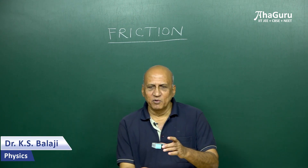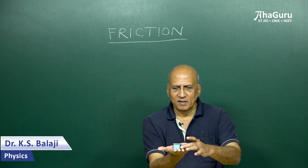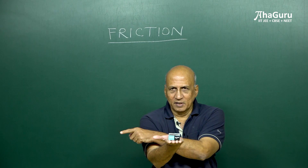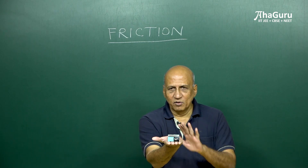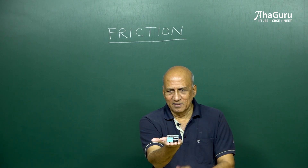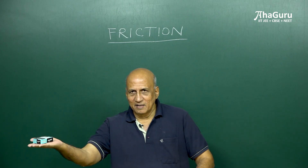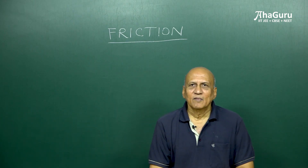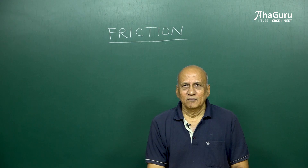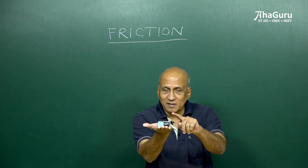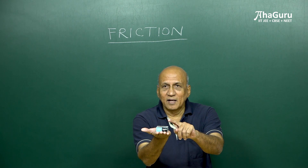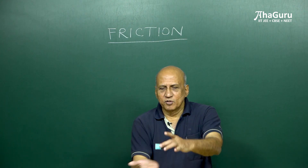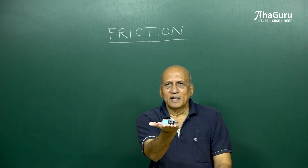Check out this little box which I am going to place on my hand. I am just going to accelerate my hand to the right. I am not going to do anything to the box except leave it on my hand and accelerate to my right. I find that the box also accelerates to the right. And that is due to friction. Because if there was no friction between the top of my hand and the bottom of this box, my hand would just slide away and the box would fall. So clearly it is friction that is accelerating this box.